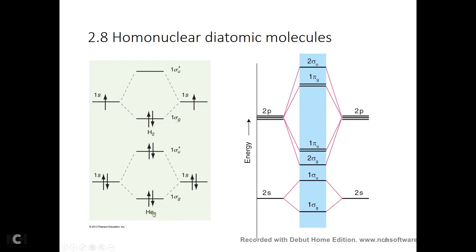We can also deal with helium-2. We have a helium atom here and here. They both contribute a 1s atomic orbital. Two 1s orbitals combine again to form MOs — via constructive interference we have the sigma orbital, via destructive interference we have sigma star. G is symmetrical, U is anti-symmetrical. This asterisk means it's an anti-bonding orbital. We put electrons in the lower energy orbital first — only two here, due to the Pauli exclusion principle, we can only accommodate two electrons in this orbital.